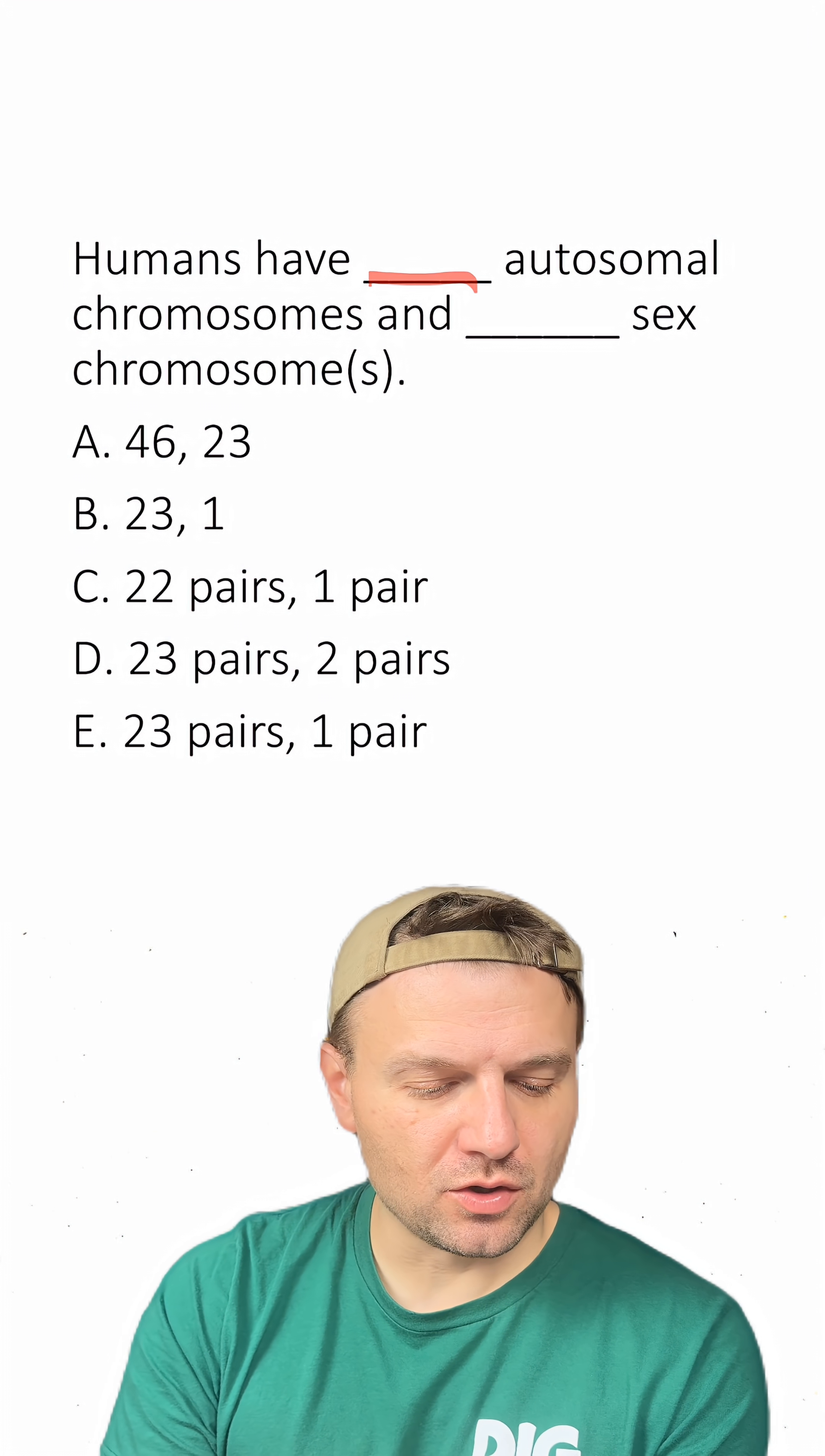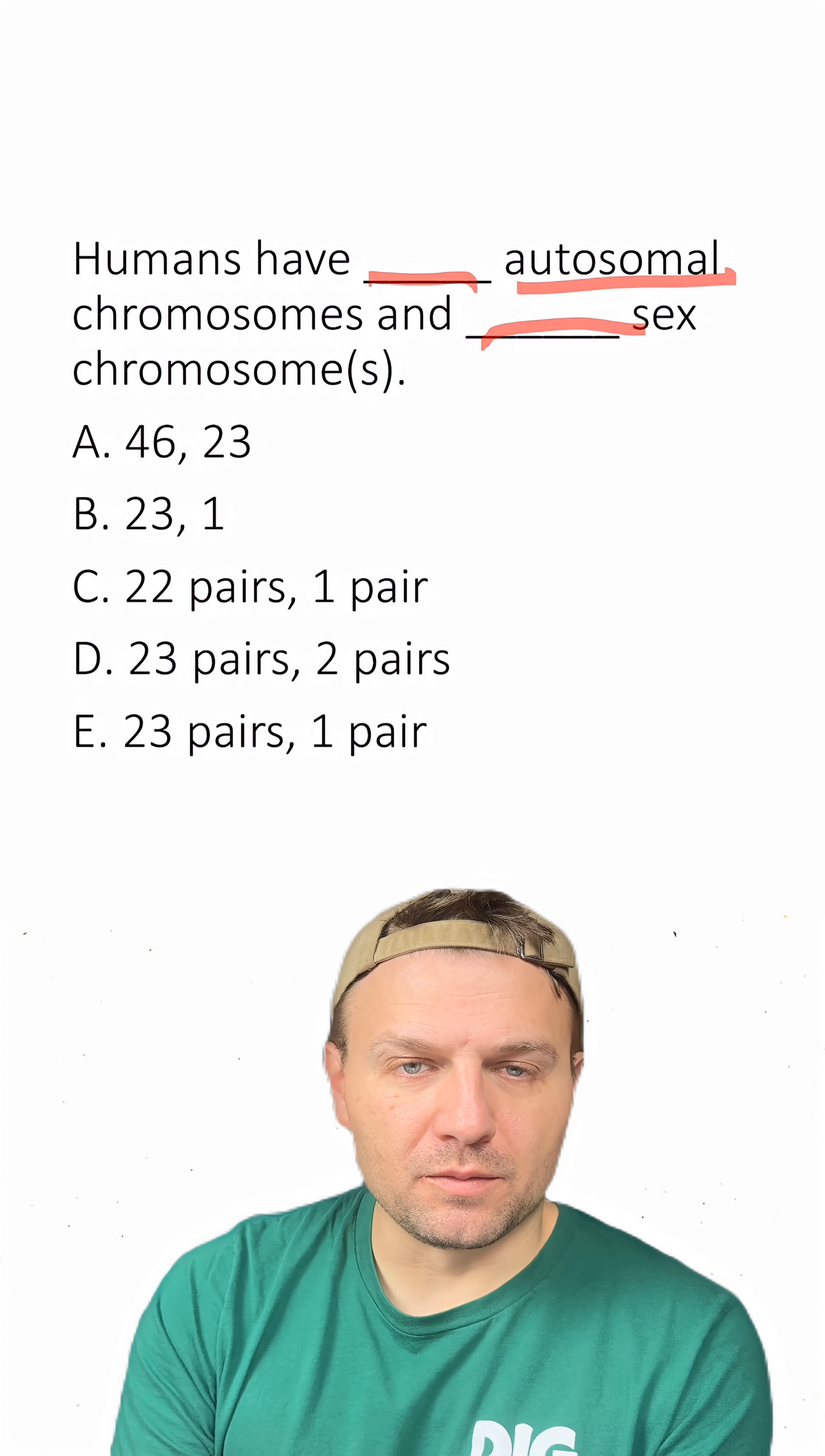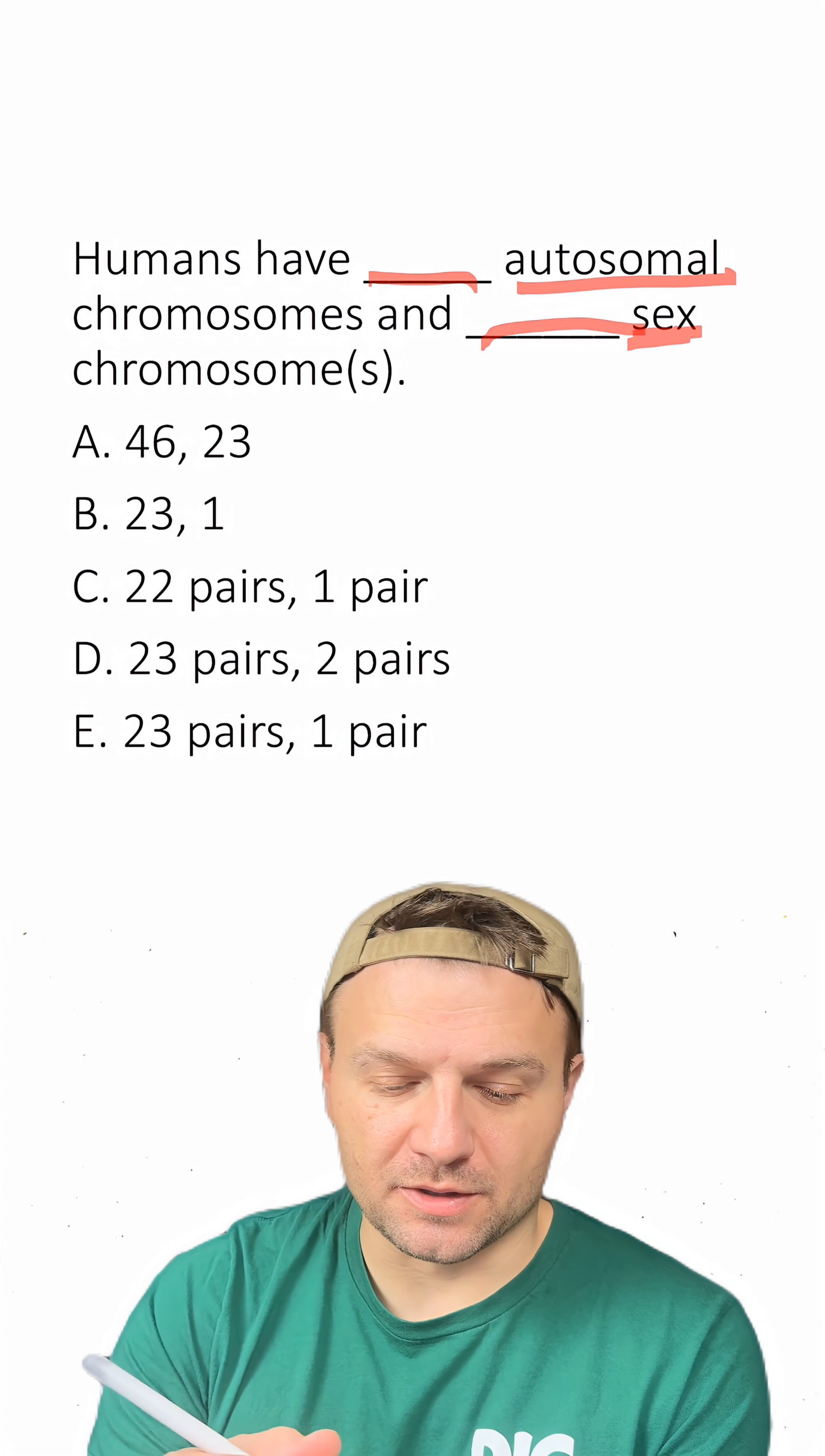Humans have blank autosomal chromosomes and blank sex chromosomes. Remember that autosomal means chromosomes that don't determine the sex of an individual. Sex chromosomes are going to be ones that do determine the sex.